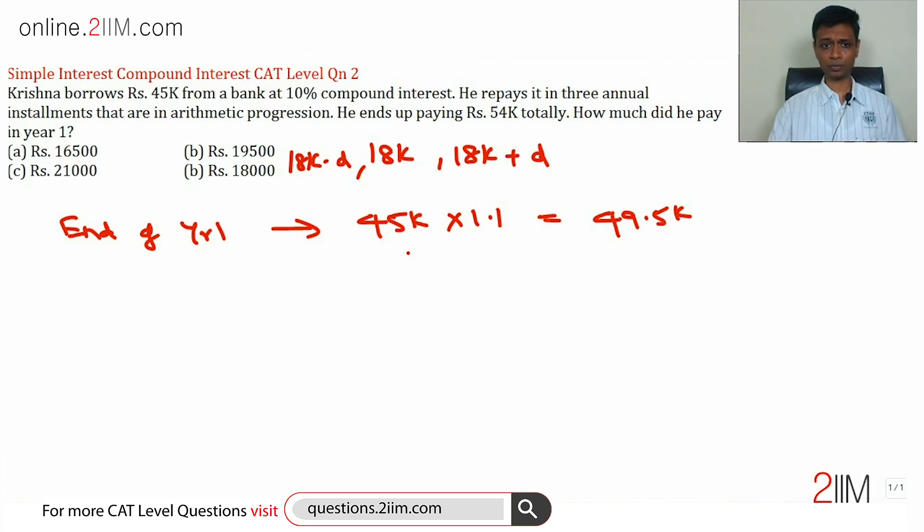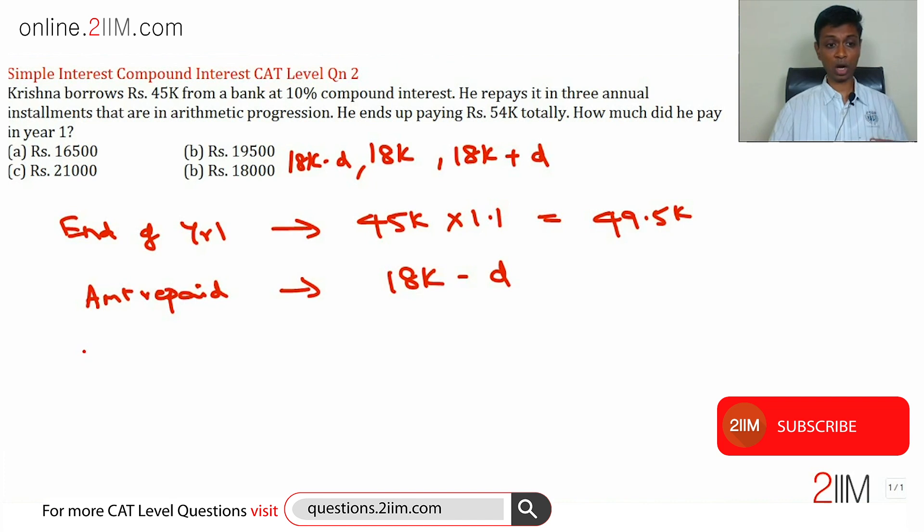Now he does not repay this entire amount. The amount repaid at the end of year one is nothing but 18k minus D. So he owes 49,500 and pays 18,000 minus D, whatever that D might be.